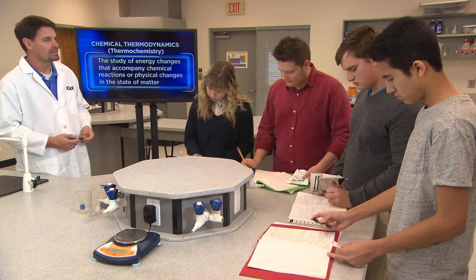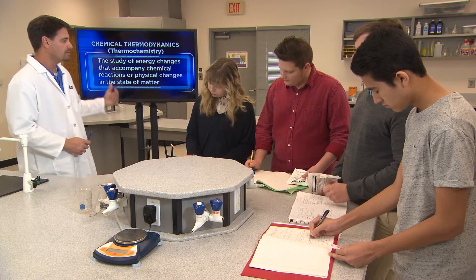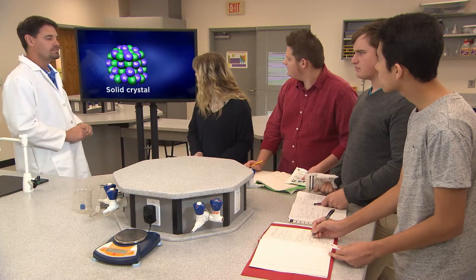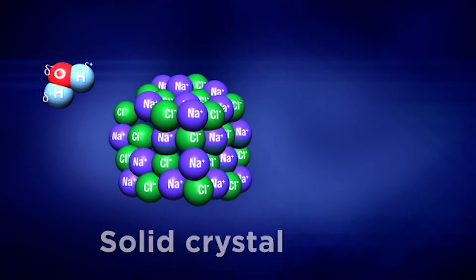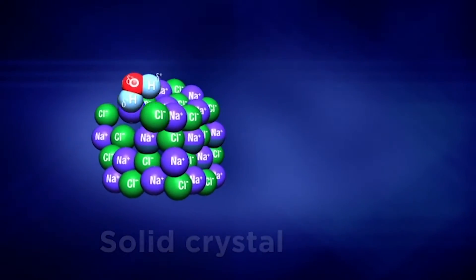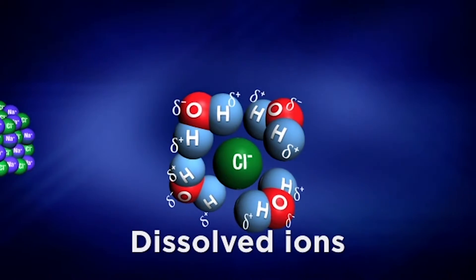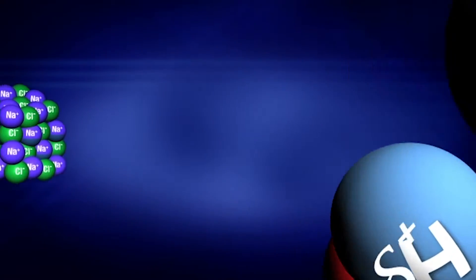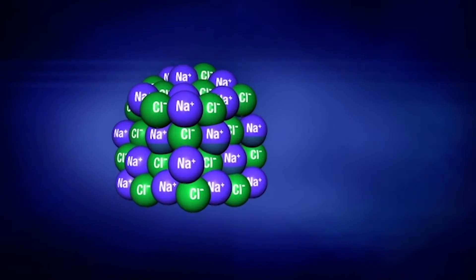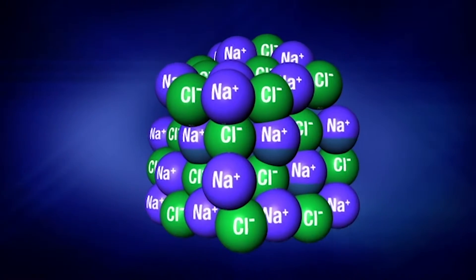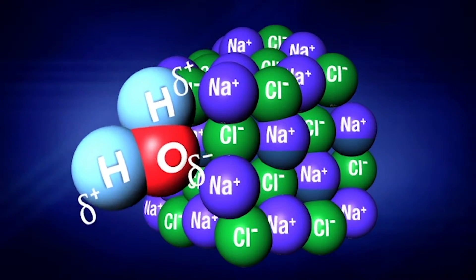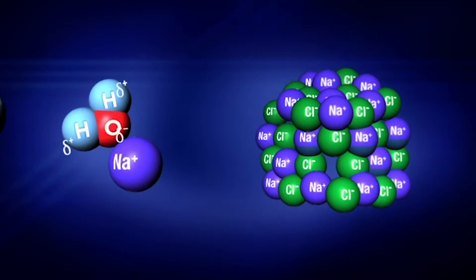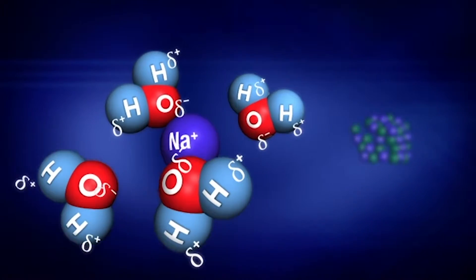The process of dissolving an ionic compound simply means that the ions in the ionic compound are surrounded by water molecules. In this case, the dissolving process is energetically favorable and it generates heat. And one of our goals in this unit is to understand why this dissolving process generates heat.